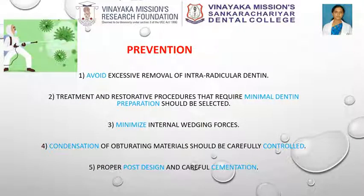Prevention: because the causes of vertical root fractures are well known, prevention should not be difficult. The safety rules are: avoid excessive removal of inter-radicular dentin; select treatment and restorative procedures that require minimal dentin preparation; minimize internal wedging forces; carefully control condensation of obturating materials; posts should be as small as possible and have a passive fit; cementation should be done carefully and slowly, and an escape vent for the cement is probably helpful.